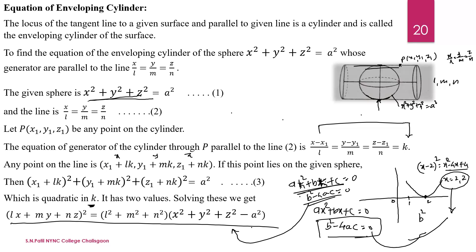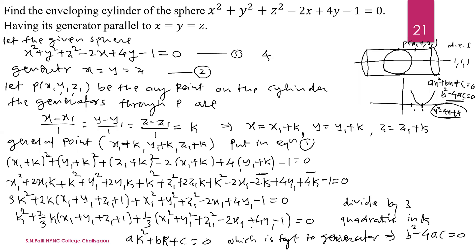Now let us see the numerical example on Enveloping Cylinder. The question is: find the Enveloping Cylinder of the sphere x² + y² + z² − 2x + 4y − 1 = 0, having its generators parallel to x = y = z, that is x/1 = y/1 = z/1. This means the direction ratios are 1, 1, 1.